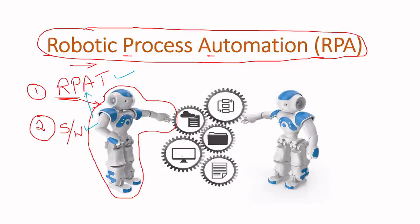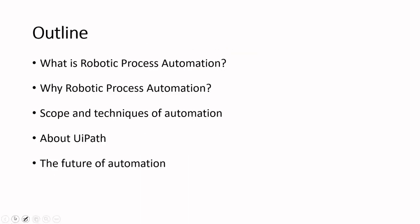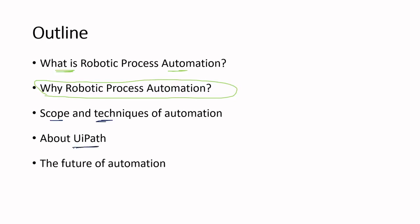With this introduction, we shall start the journey to understand Robotic Process Automation. We begin with an introductory chapter titled 'What is Robotic Process Automation.' The roadmap of this chapter is: first, what is RPA; then, why do we need RPA; then, the scope and techniques of automation; then, the UiPath platform; and finally, the future of automation.